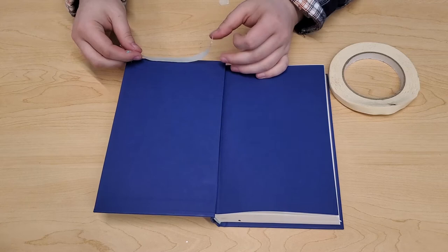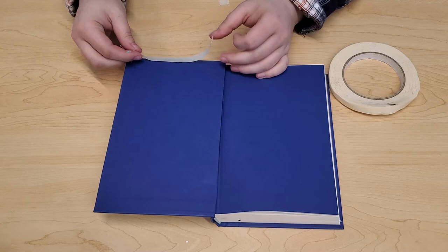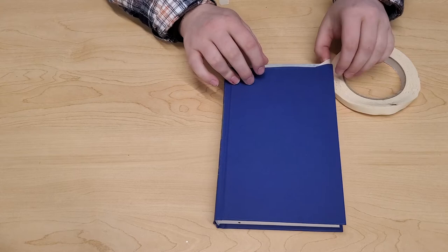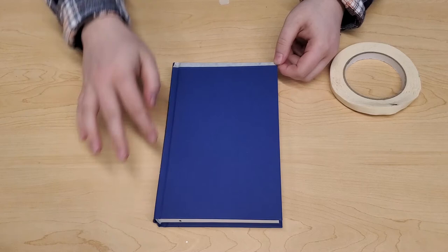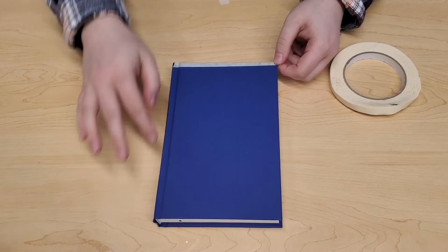So then you're going to go ahead and stick it just on the edge there and fold it over. This is what's going to protect the book from the paint. So you want to make sure that you do a good job taping and you have complete coverage of all of the edges. And don't forget the spine as well.